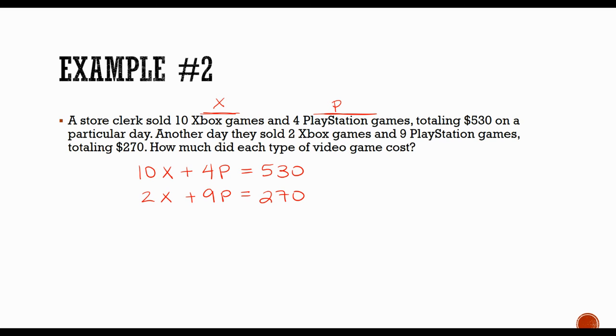There are your two equations with your two variables. From here you can use either substitution or elimination. Because there are coefficients in front of all the variables, elimination would be the preferred route to go.